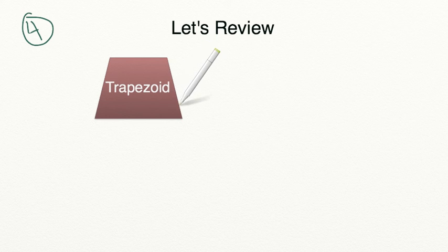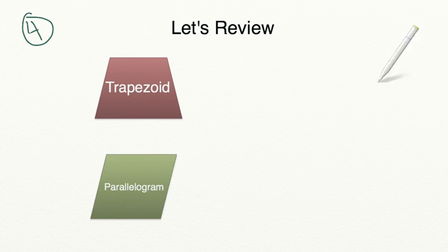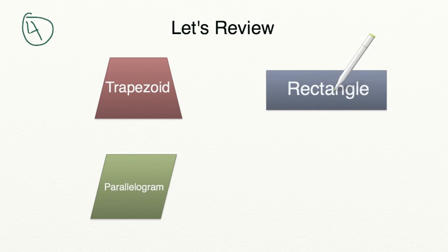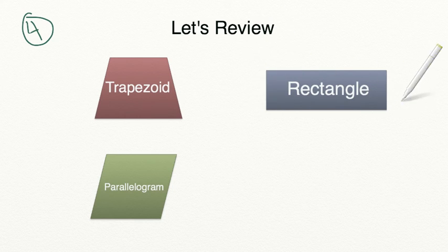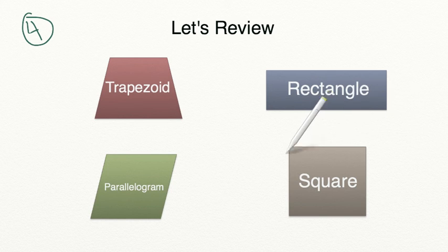Let's review what you learned in today's lesson. A quadrilateral is a polygon which has four sides. The trapezoid has four sides with only one set of parallel sides. A parallelogram is also a four-sided figure which has two sets of parallel sides. Getting even more specific, we have a rectangle, which is also a four-sided figure with two sets of parallel sides and four 90-degree angles. And lastly, our most specific shape of all, we have a square, which has four sides, two sets of parallel sides, four 90-degree angles, and four sides that are all the same length.